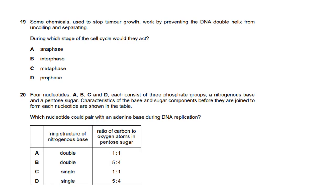Question nineteen: chemicals that stop tumor growth by preventing the DNA double helix from uncoiling and separating act during DNA replication. DNA replication occurs during interphase, specifically the S phase. Interphase is made up of the G1 phase, the S phase, and the G2 phase. So interphase is what is being affected.